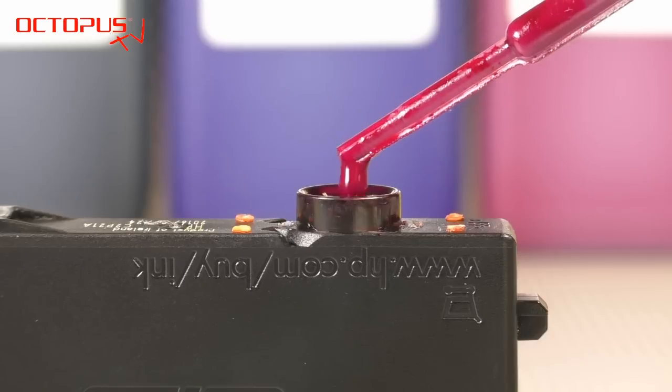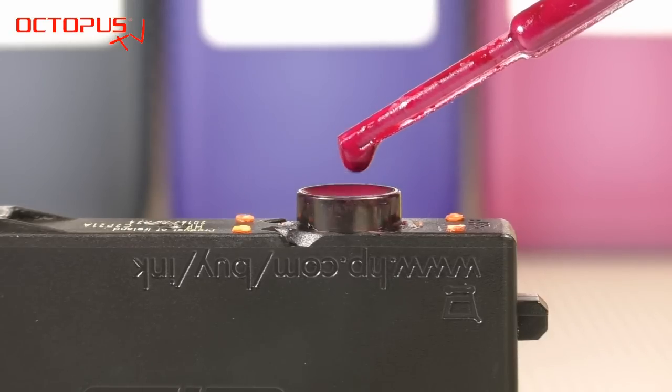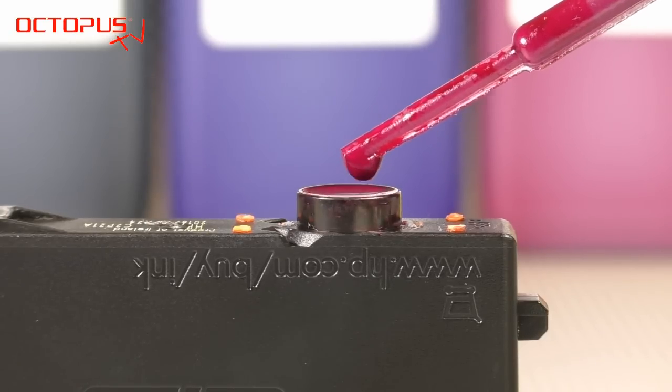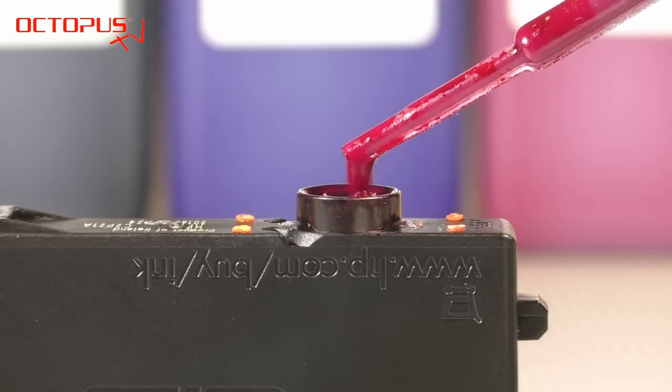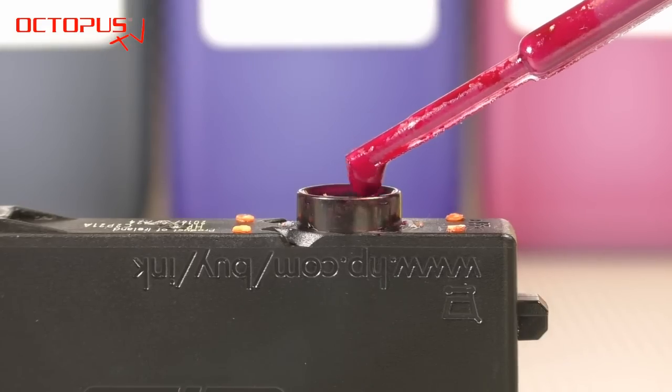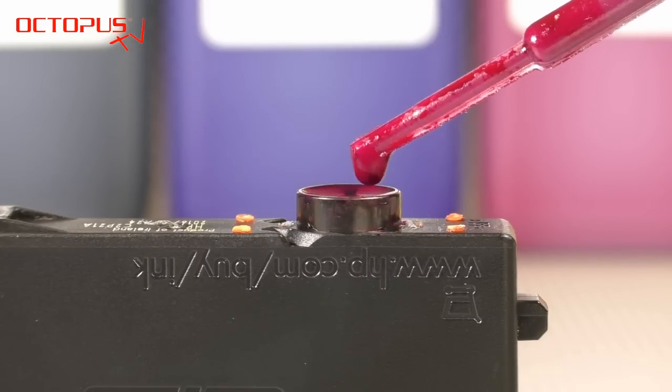If it should occur that you drip on refill ink and it is not absorbed by the sponge anymore, that means the refill ink remains in the ink port, then you know that the sponge is saturated with ink completely.